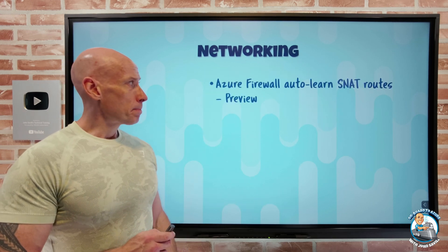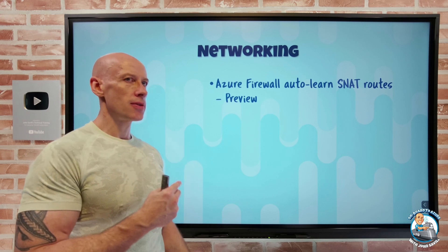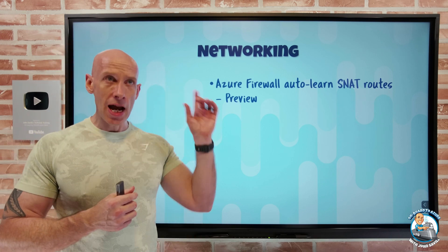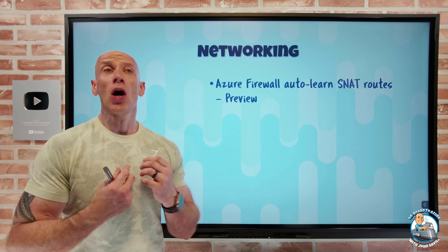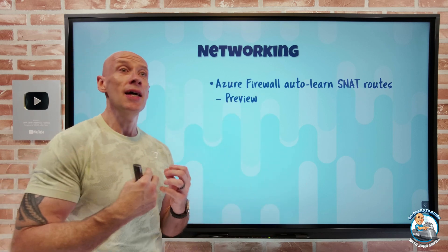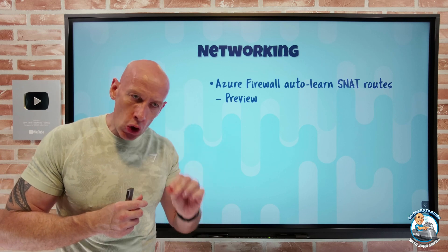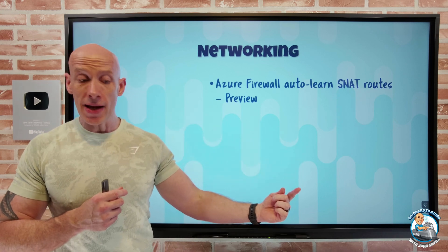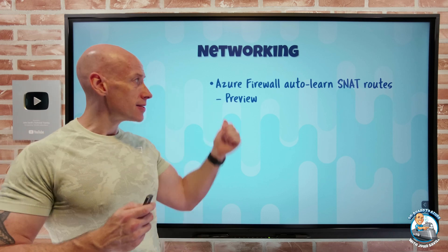On to networking. Azure Firewall can now auto-learn SNAT routes. With Azure Route Server, you tell Azure Firewall to talk to it. Azure Route Server can learn via BGP sessions with SD-WAN appliances about private IP addresses you want excluded from SNAT. Every 30 minutes, Azure Firewall talks to the Route Server to find those private ranges it shouldn't SNAT. That's in preview.